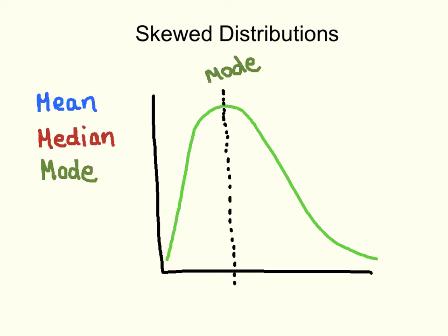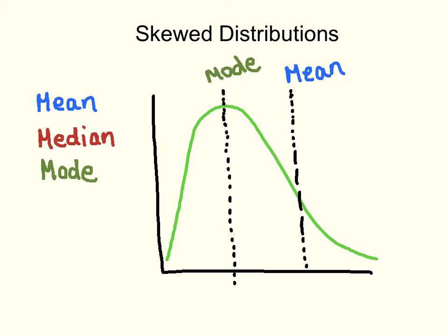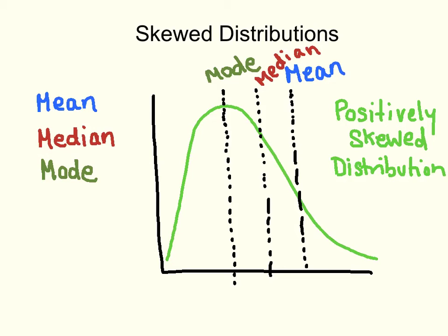The mean is the measure of central tendency that is most affected by outliers. In this picture, we have a positively skewed distribution, meaning the tail is pointing towards higher numbers. So the outliers are of higher values — the tail always represents the outliers. The mean, being pulled by the outliers, is always going to be towards the tail. The median is always going to fall between the mode and the mean. So for a positively skewed distribution, the mean is furthest to the right, the mode is furthest to the left at the apex, and the median falls in the middle.